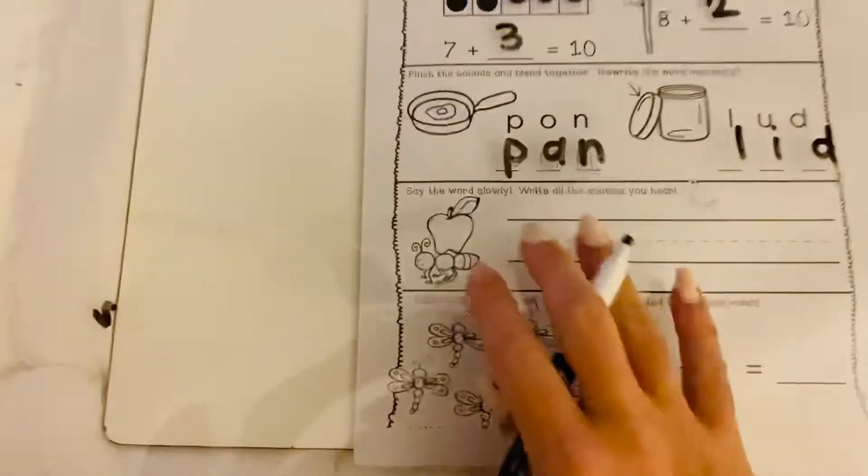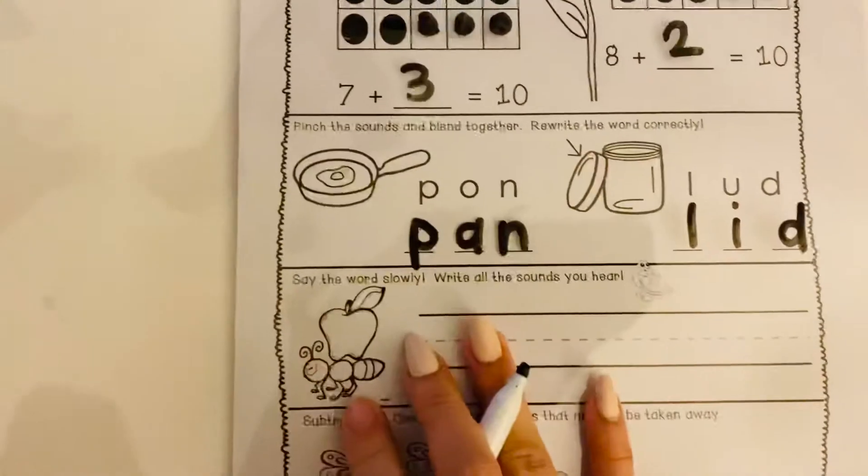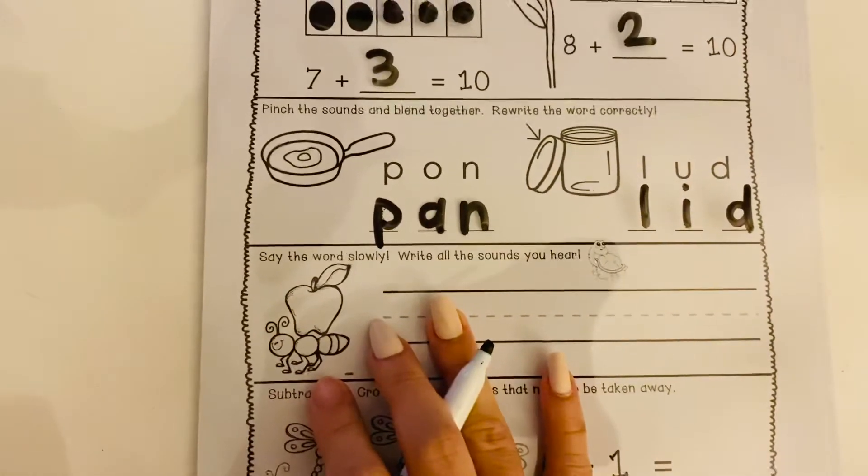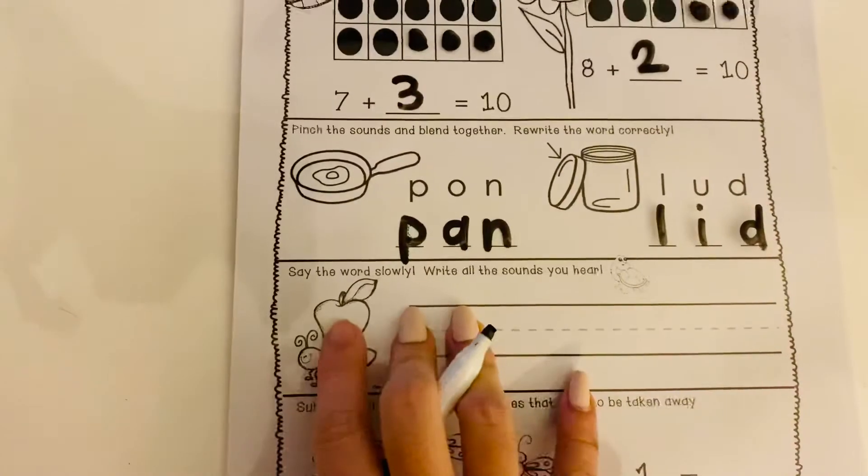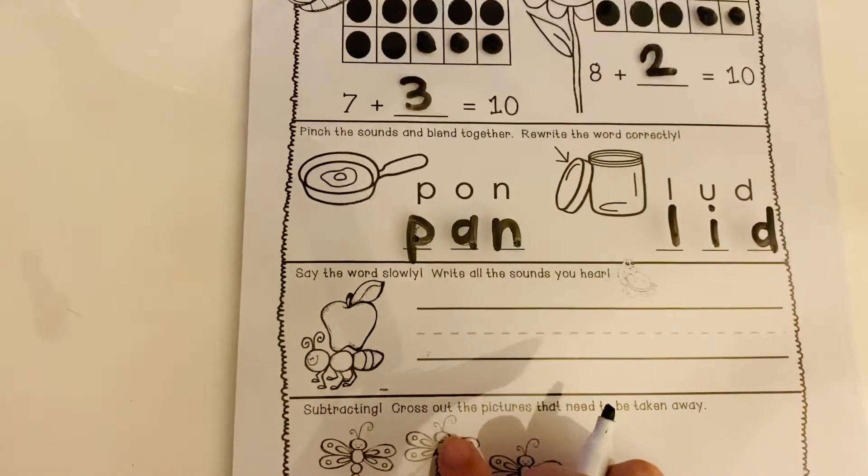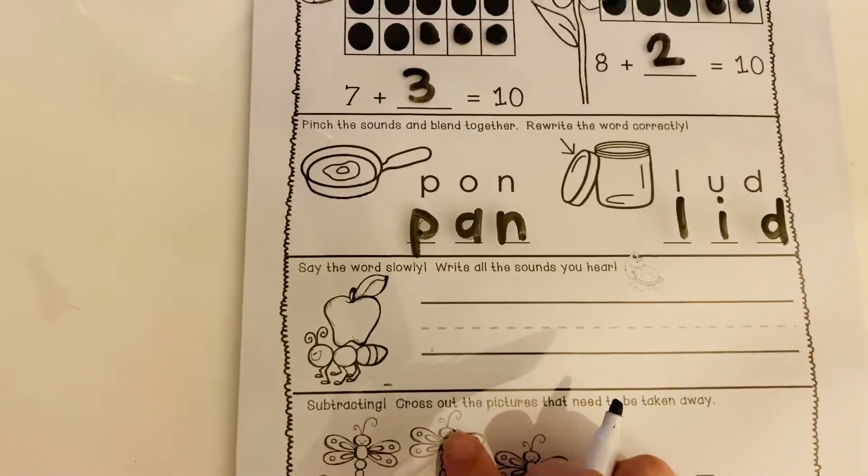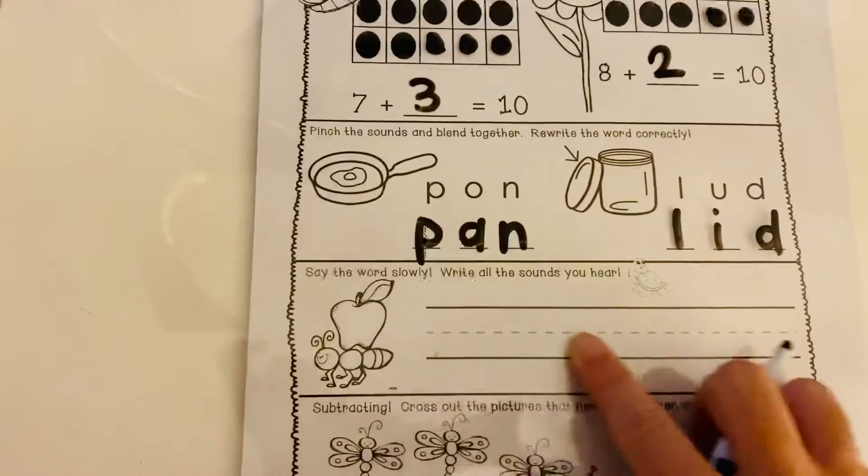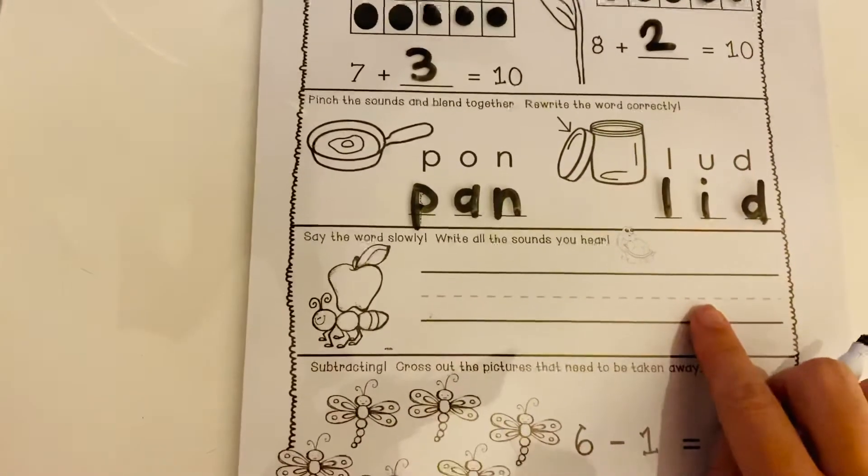All right, down here it says, say the word slowly and write all the sounds you hear. So we're going to go ahead and do apple. So you're going to say, ah, p-l, apple, and say all and write all the sounds that you hear in the blank.